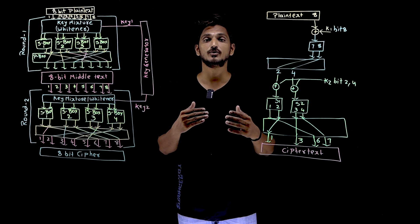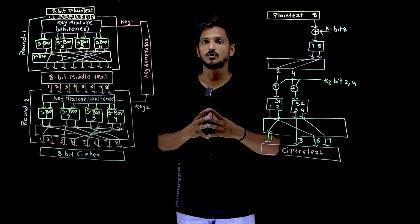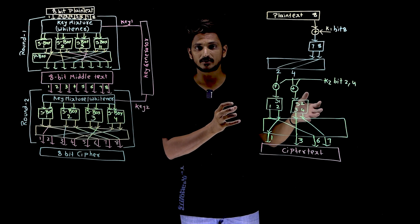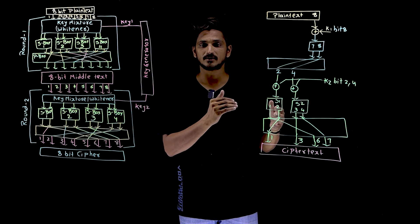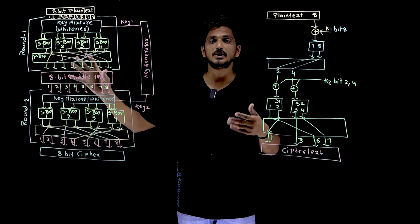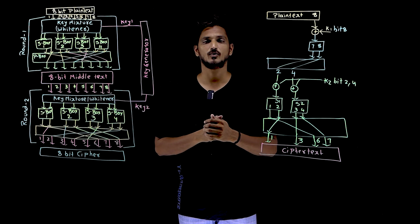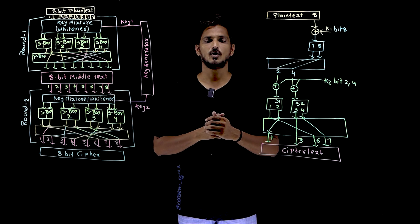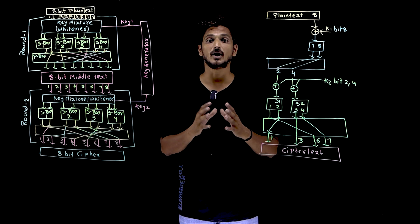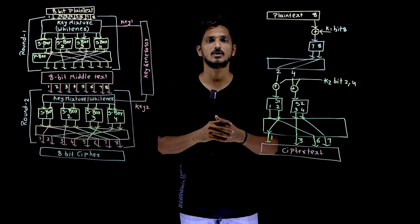So this is what diffusion and confusion means, which we provide using product ciphers. In real-life examples that we will discuss in coming classes — DES, AES — more complex systems than this are going to be used, but the same product cipher concept is applied. Hope you understand the confusion and diffusion concept from the product cipher. If you have any questions, please post them in the comment section below.